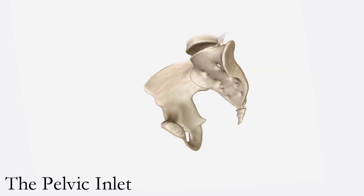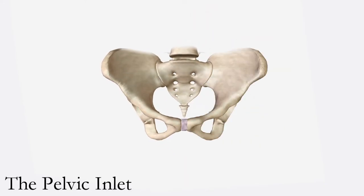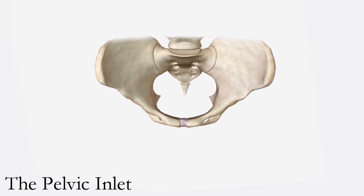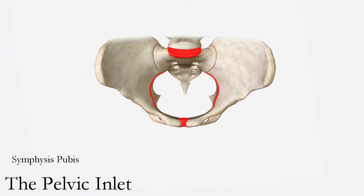The pelvic inlet, or the superior strait, is considered the superior plane of the true pelvis. It is bounded by the promontory and all of the sacrum posteriorly, by the linea terminalis laterally, and by the horizontal pubic rami and symphysis pubis anteriorly. Fetal head engagement during labor is defined by the fetal head's biparietal diameter passing through this plane. The pelvic inlet of females is more round than ovoid, aiding in fetal passage.